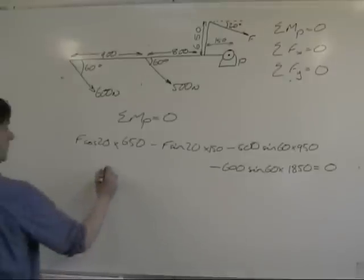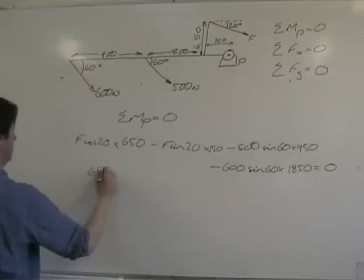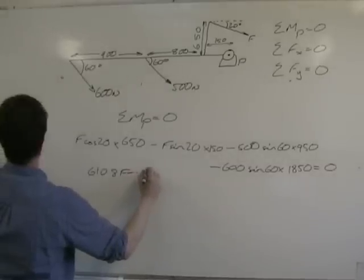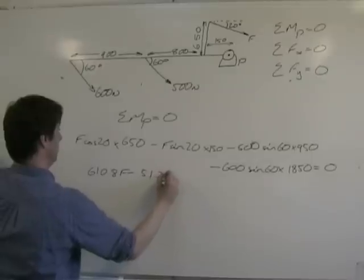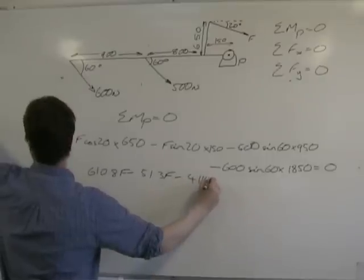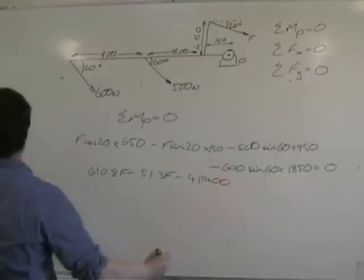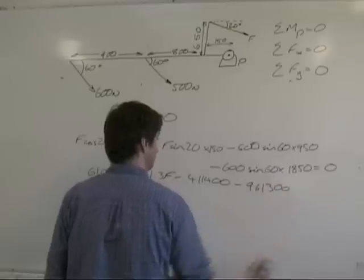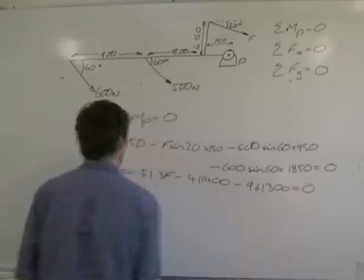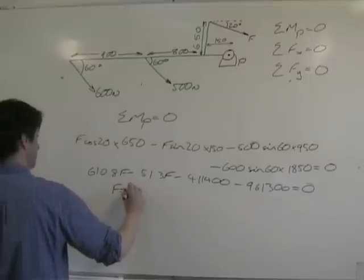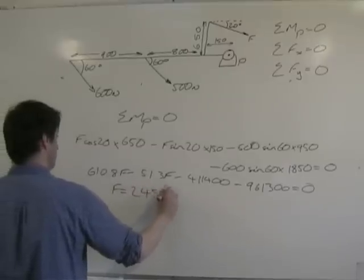That's 610.8F minus 51.3F minus 411400 minus 96130, and all that equals zero. To solve that line, we get F equals 2450 newtons.